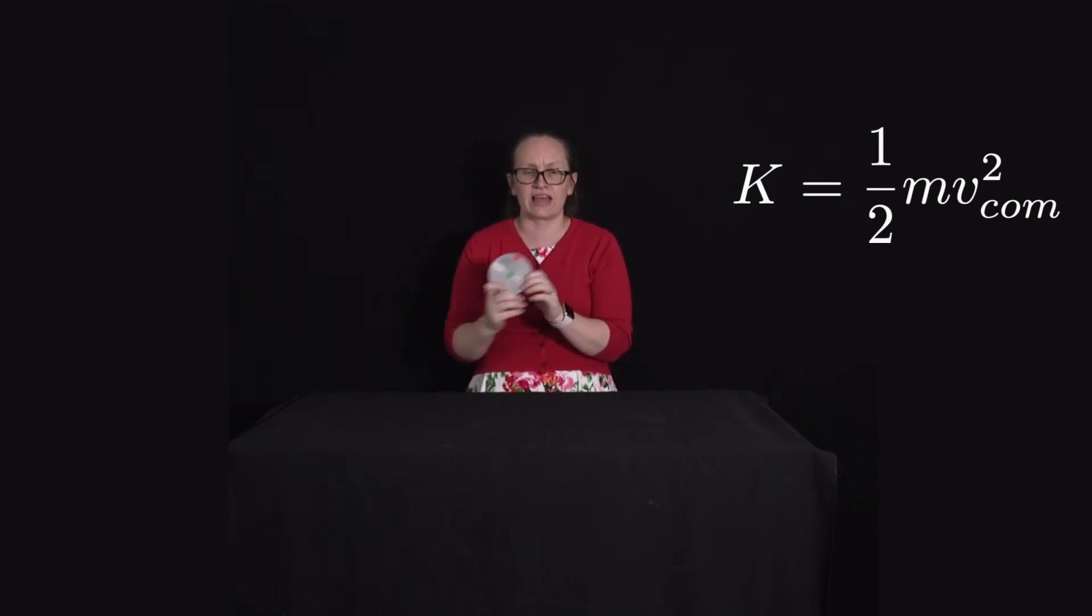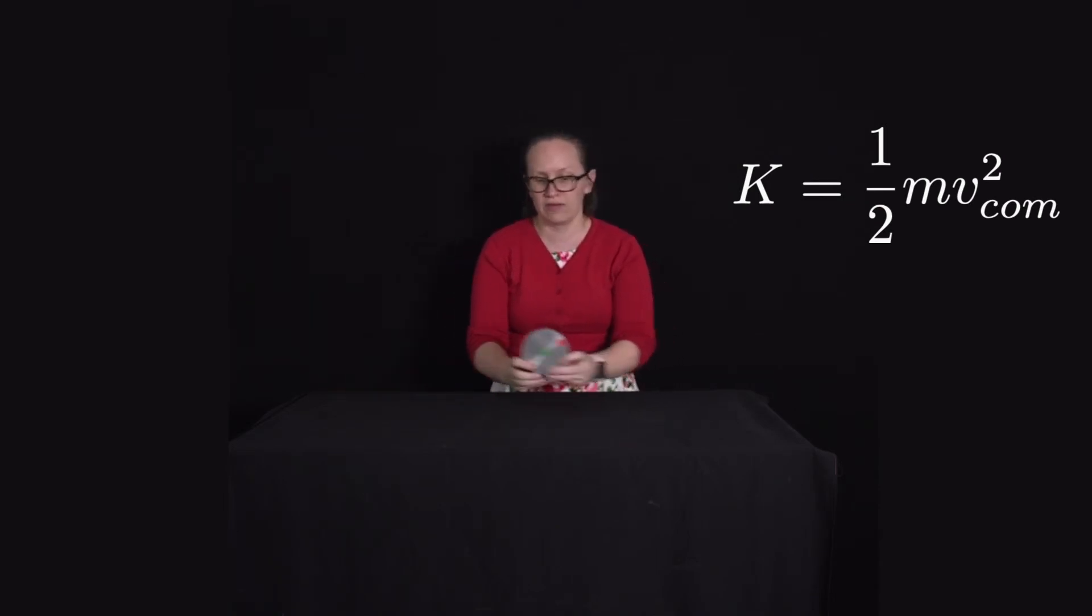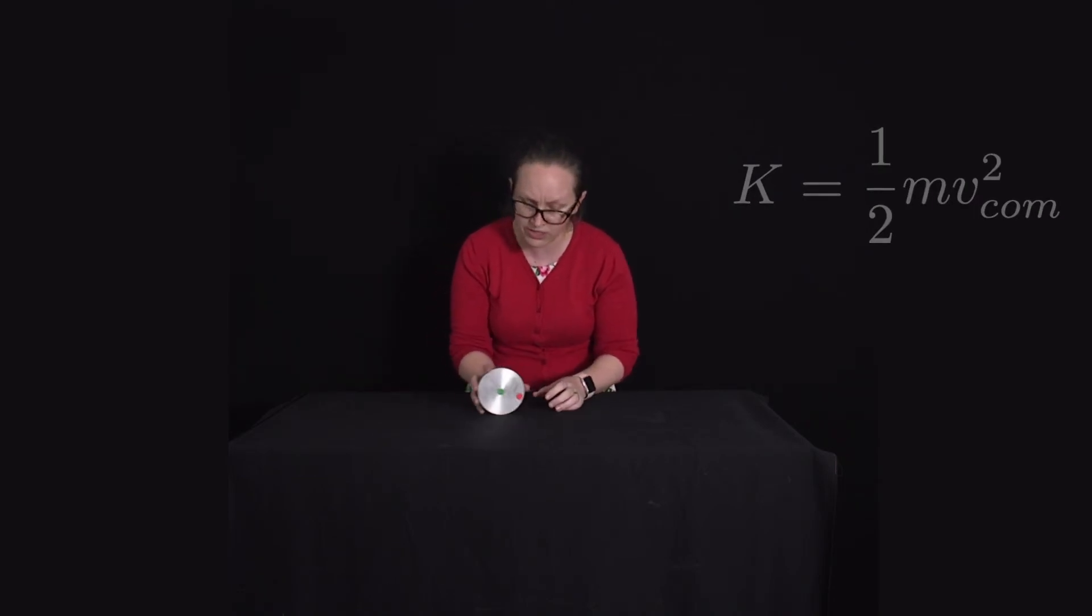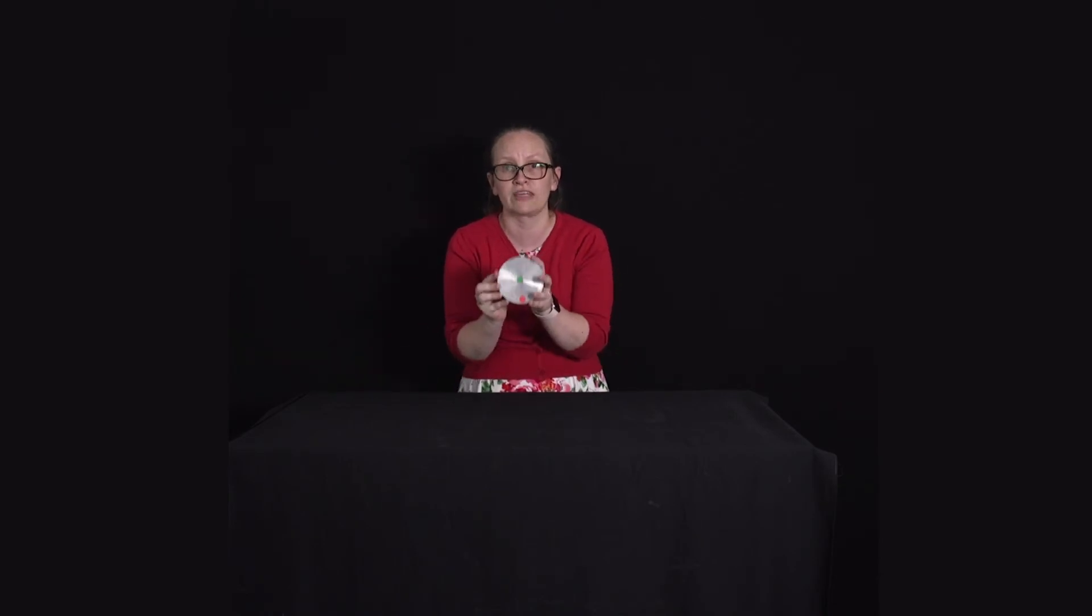Now as well as that translational motion, we've also got a rotational motion about its centre of mass. This rotational motion is caused by the torque, which comes from the frictional force acting at the radius of the object. The rotational motion also has an associated kinetic energy.